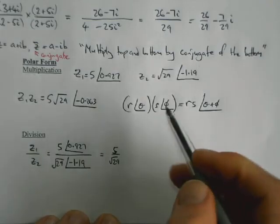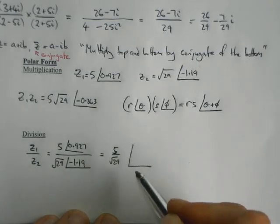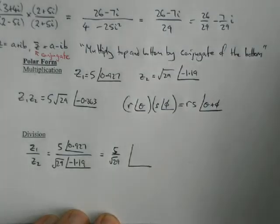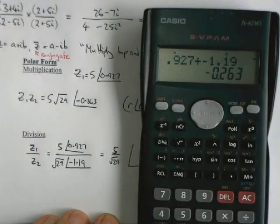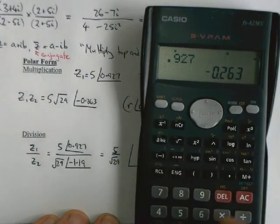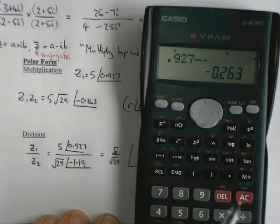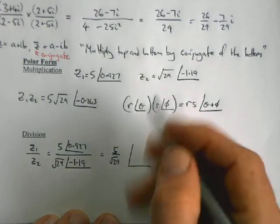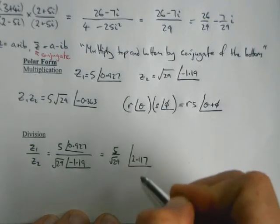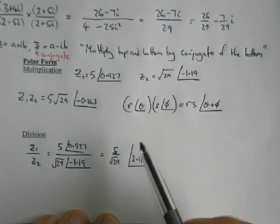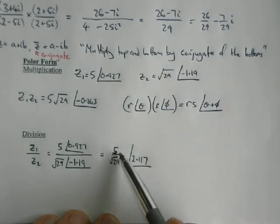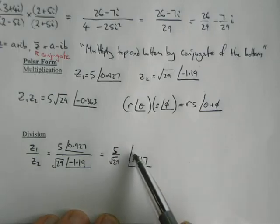You're dividing your two magnitudes and then subtracting your two angles, so 0.927 minus negative 1.19 equals 2.117. We have a new complex number in polar form with a magnitude and a direction.